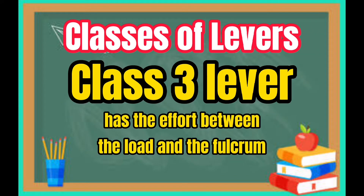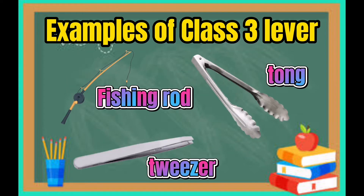Class 3 lever has the effort between the load and the fulcrum. Examples of class 3 lever: fishing rod, tong, tweezer.